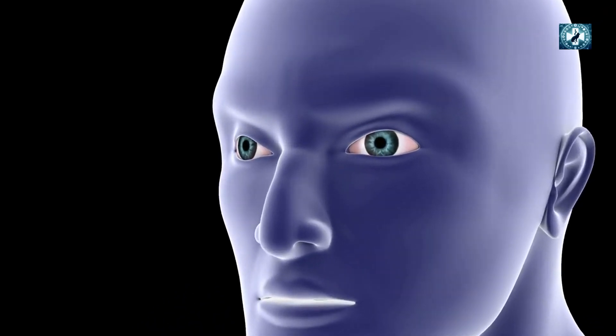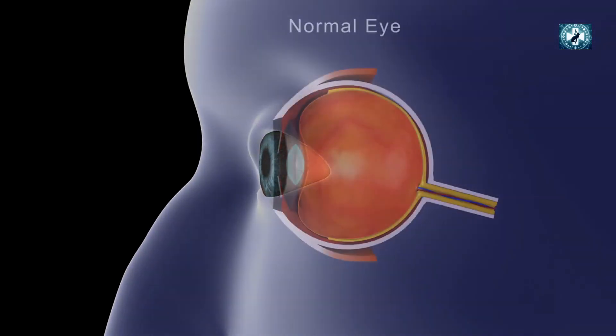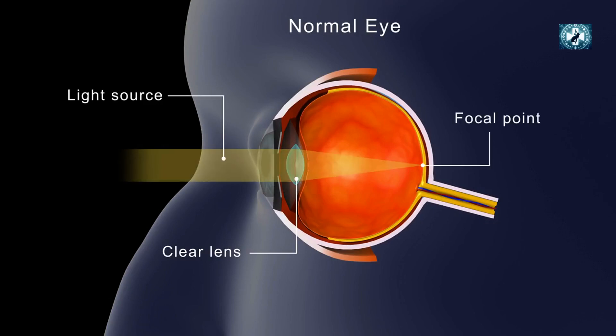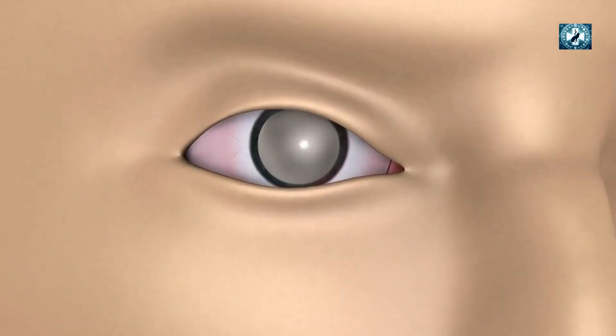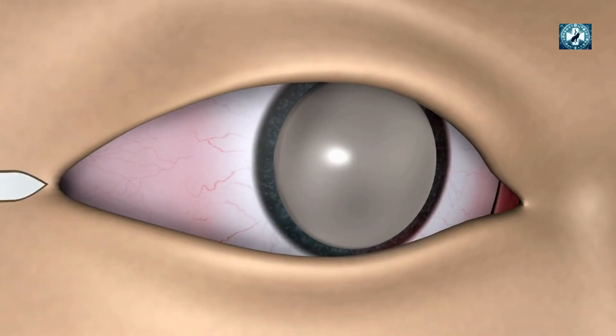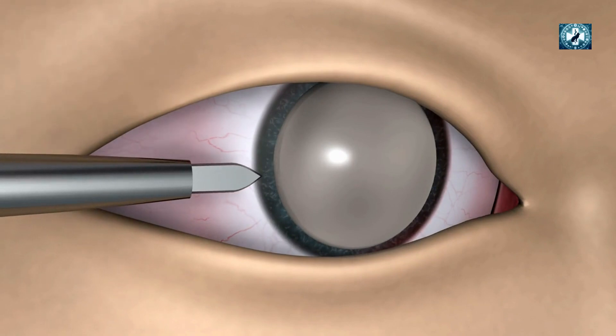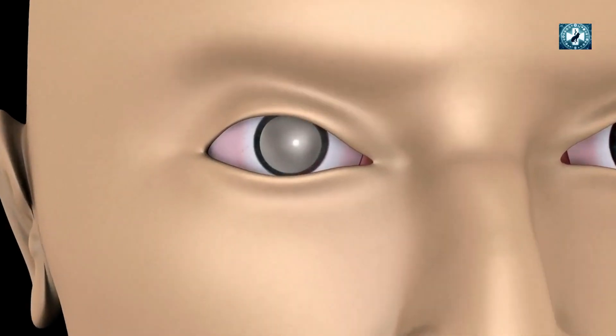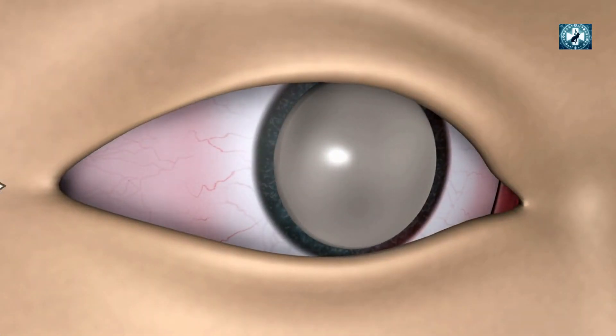As we already know, cataracts are a condition where the lens of the eye becomes progressively opaque, leading to blurred vision and, if left untreated, blindness. This clouding of the lens is primarily due to aging, but factors such as diabetes, smoking, and prolonged exposure to sunlight can accelerate their development. Cataracts typically develop slowly and can affect one or both eyes.